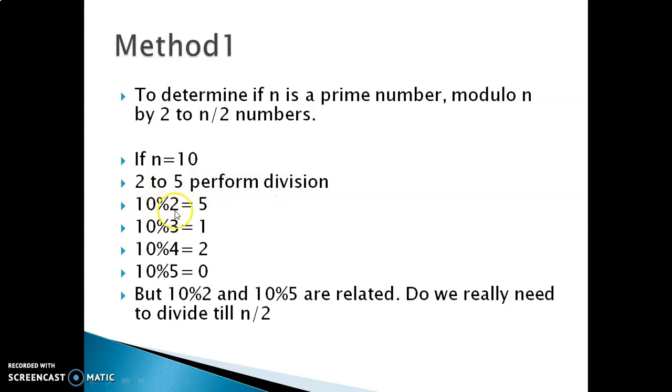So 10 modulo 2 is 0, and similarly 10 modulo 3 is 1, 10 modulo 4 is 2, and 10 modulo 5 is 0. Modulo will give you the remainder, so 10 modulo 2 is 0. Wherever we are getting a value of 0, that means it is divisible, and wherever we are getting a remainder, it is not divisible.